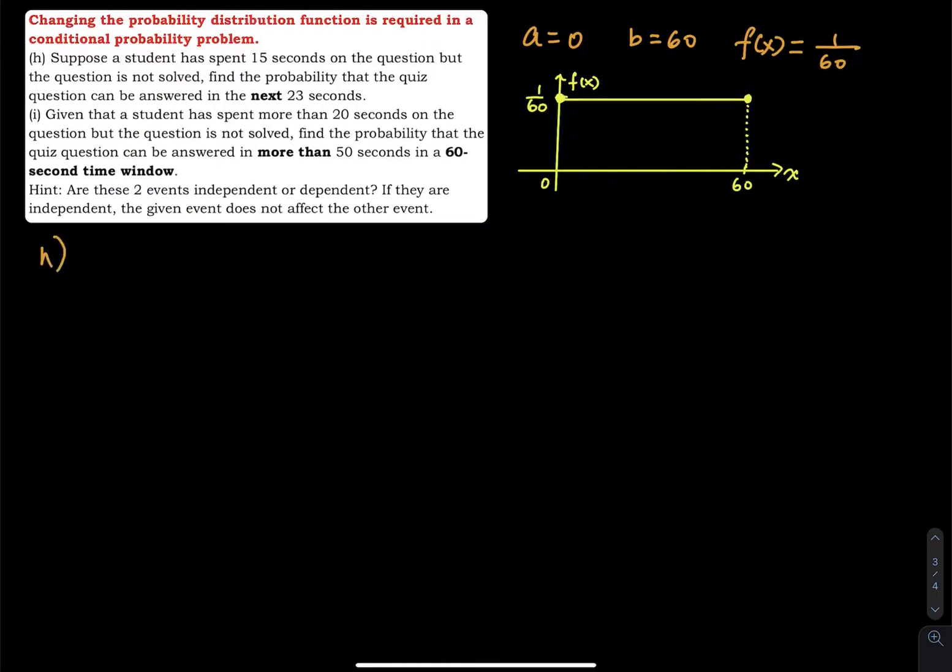the next 23, what does that mean? That means 15 plus 23, that is equal to 38. Or I can change the problem to given that the time is greater than or equal to 15 seconds. What is the probability? Now, listen to me, this problem can be phrased in a different way.